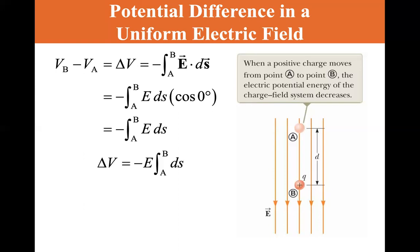So delta V, since E is a constant, delta V is equal to minus E integral of A to B of DS. So delta V is equal to minus E D. So the change in potential, electric potential is the electric field times a distance. And the change in electric potential energy is equal to Q delta V is equal to minus Q E D.